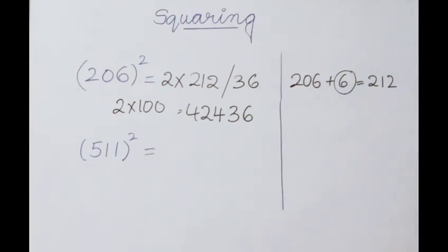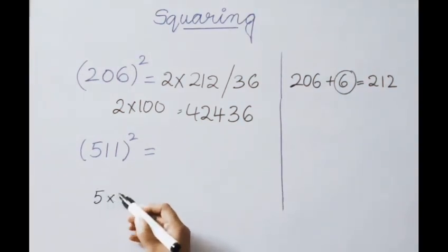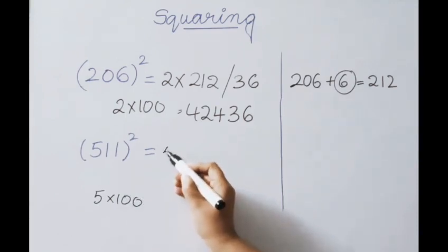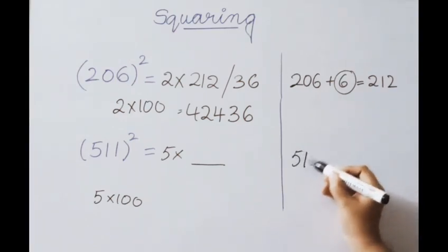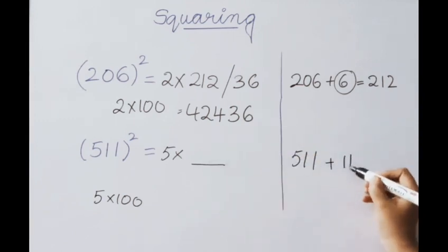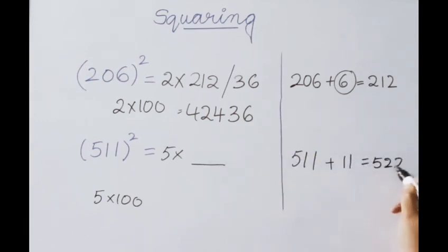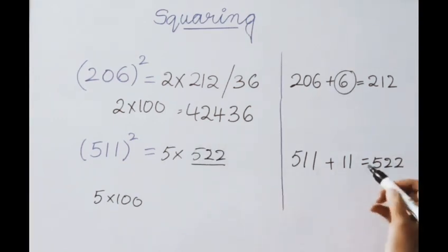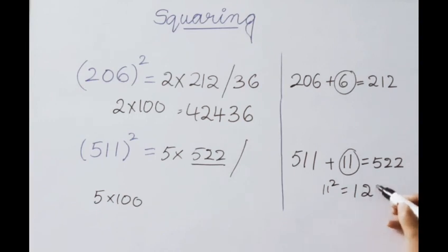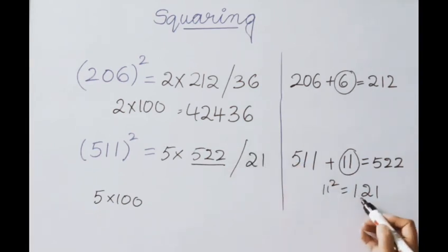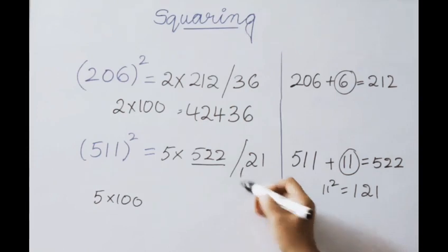Next example: 511 squared. The base value is 500, which is 5 times 100, so multiply the first part by 5. Above 500, the excess value is 11. Add 11 to 511: we get 522 as the first part answer. 11 squared is 121. Since the base is related to 100, only 2 digits are allowed; write 21 and carry the 1.